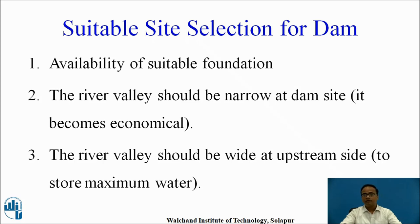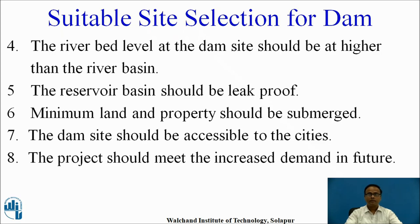The third parameter is the river valley should be wide at the upstream side. The purpose is to store maximum water. As we know the demand is more and supply is less, so for maximum storage of water the river valley should be wide at upstream side. Another important parameter is the river bed level at the dam side should be at a higher level than the river basin, because the storage of water will be more, resulting in a greater total volume of water available for human requirements.